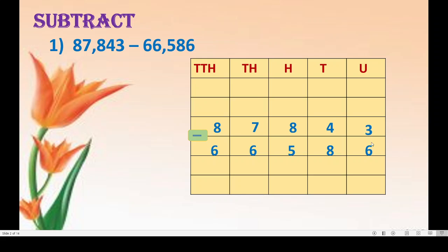In the unit place we have to subtract 6 from 3, which is not possible because 6 is greater than 3. So we borrow from the left-hand side — the tens place has 4, so we borrow from 4. The 3 becomes 13 because 4 gives 1 ten to the unit place, so it becomes 10 plus 3 = 13. Now 13 minus 6 equals 7.